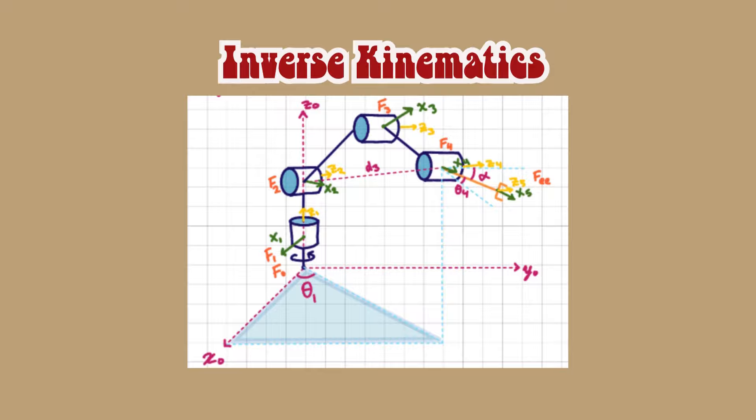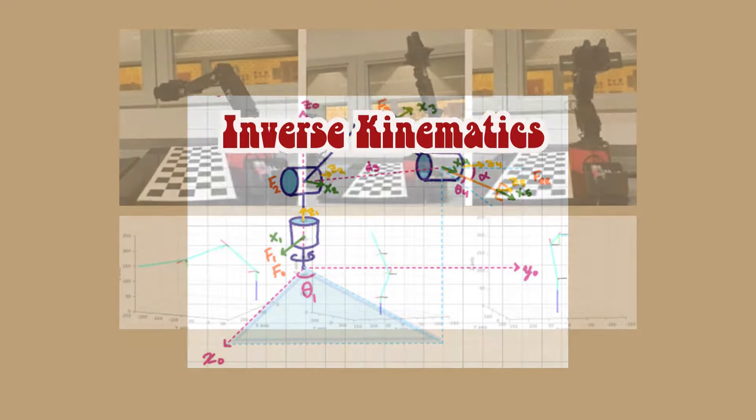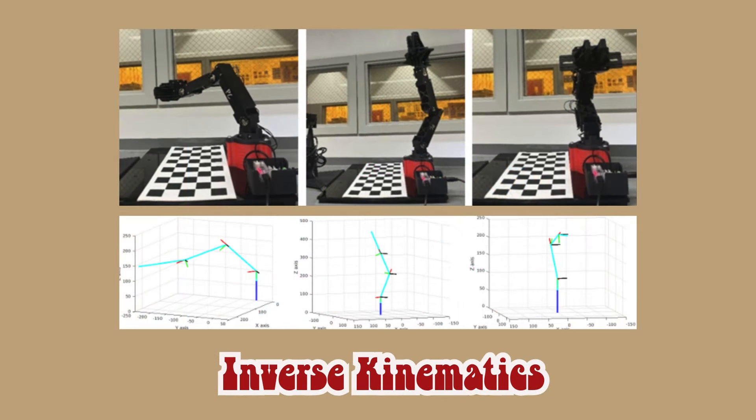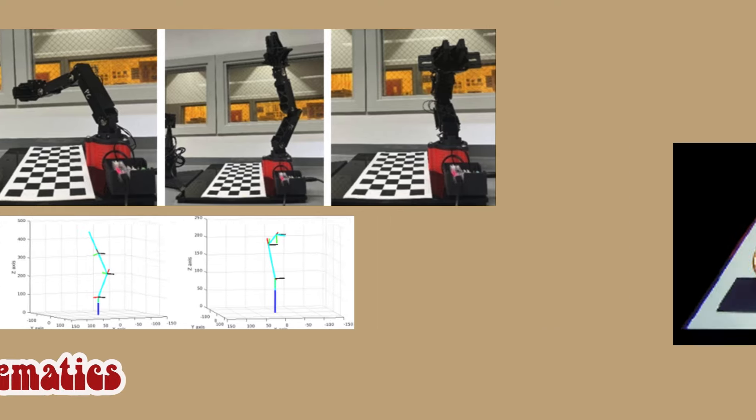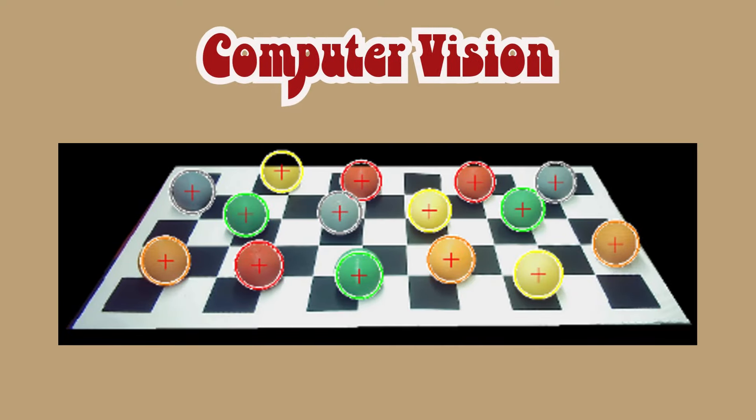Next, we solve inverse kinematics. With this, the robot arm can get to any reachable position by calculating the joint configuration to get there. But there's one more missing piece.